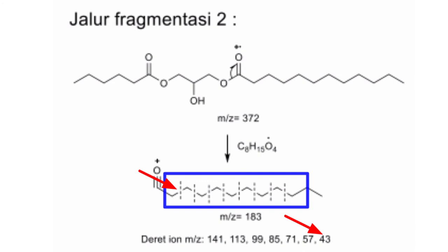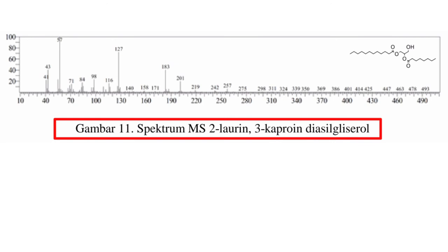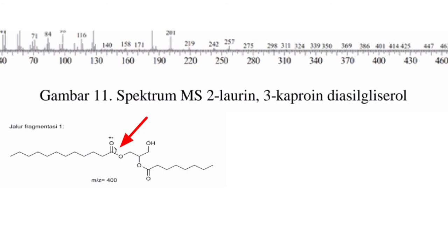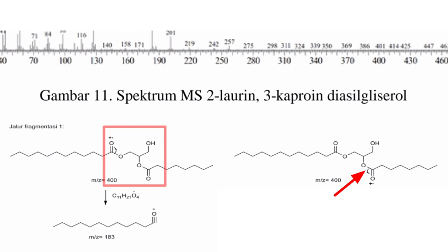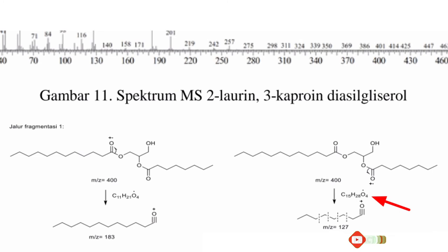Berikut gambar 11 spektrum MS 2-laurin-3-kaproin diasil gliserol. Senyawa ini mirip dengan 1-laurin-3-kaproin diasil gliserol karena terdapat 2 gugus fungsi ester, berarti pola fragmentasinya hampir sama dengan sebelumnya. Mari kita cek jalur fragmentasinya yang pertama. Karena disini terdapat pembelahan heterolisis — 1 elektron diberikan ke C-karbonil — membentuk ion asilium. C₁₁H₂₁O₄-nya menjadi radikal, dan ion asiliumnya terbaca di spektrum masa sebesar 183 m/z. Karena dia memiliki 2 gugus fungsi ester yang sama, jadi bisa jadi oksigen yang di sini terjadi homolisis juga di kanan, sama-sama membentuk ion asilium, dan terbaca di spektrum masa sebesar 127 m/z. C₁₅H₂₈O₄ menjadi radikal. Lalu ion asilium yang 127 terjadi pemutusan, mulai dari 85 m/z sampai ke 43 m/z.